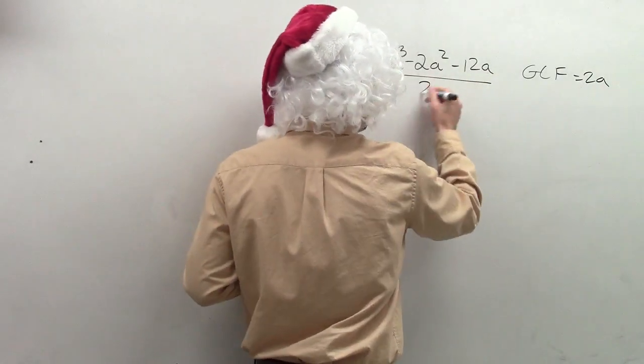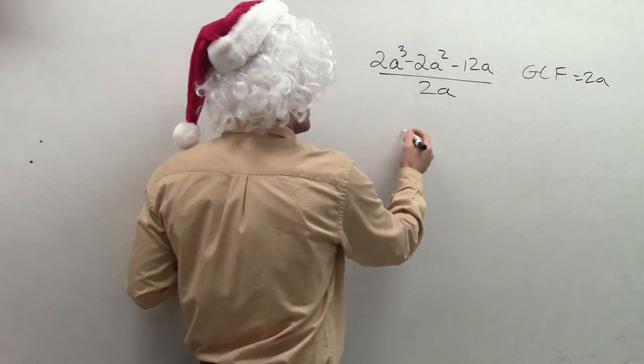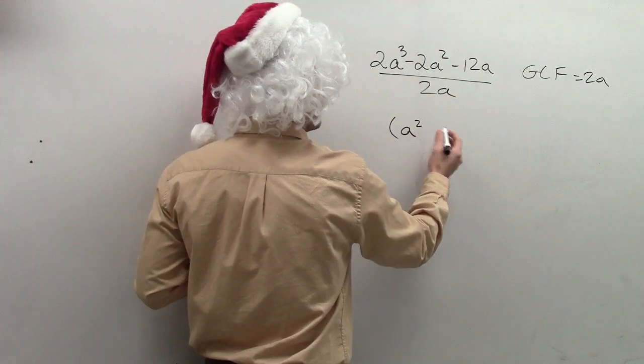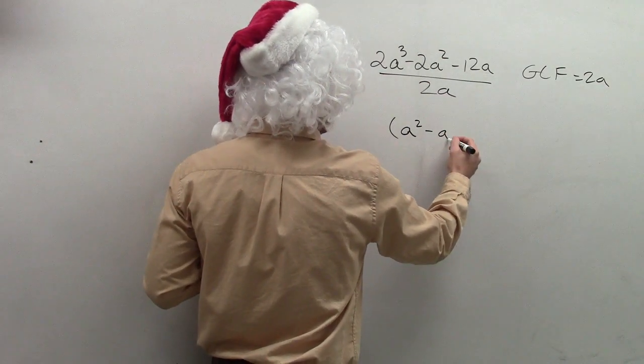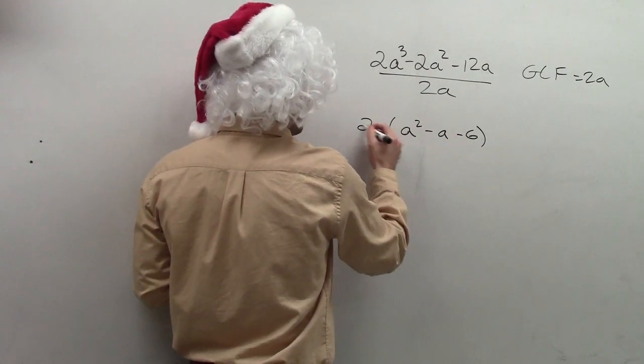So what I'm going to do is I'm going to divide each term by my GCF. When I divide each term by my GCF, I'm now going to have, let's see, a squared minus a minus 6. And that's going to be multiplied by 2a.